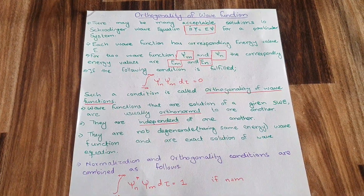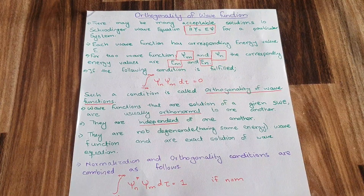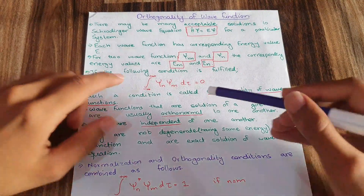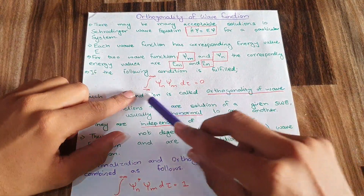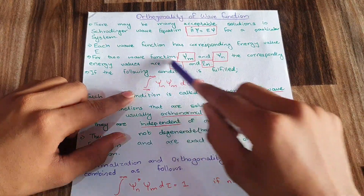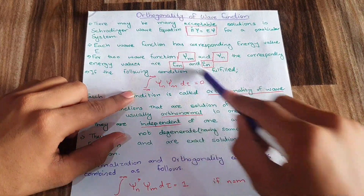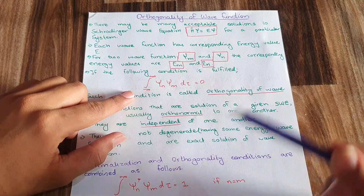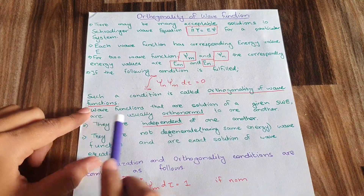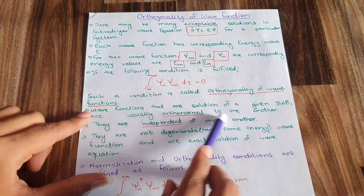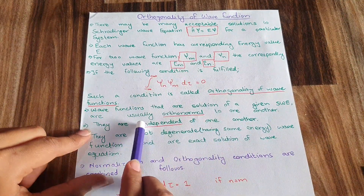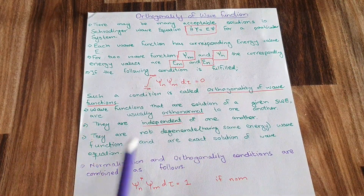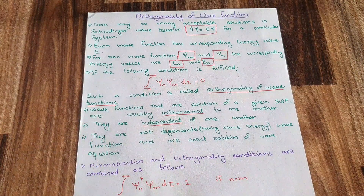This orthogonality implies the independence of energy states. Wave functions that are solutions of a given Schrödinger wave equation are usually orthonormal to one another — they are independent of one another.